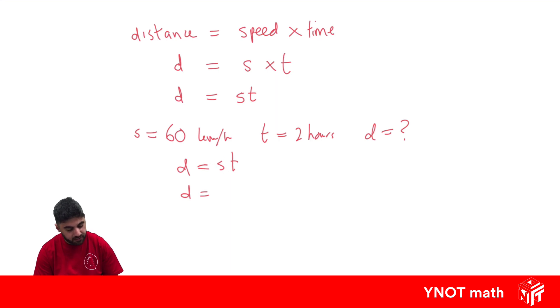So instead of writing s, we can write 60. Now, instead of writing t, we know t is equal to 2. Now we have to put the multiplication sign back, because now we're dealing with two numbers. I can't just write 602. And d is just going to equal 60 times 2, which is 120 kilometers. And that's an example of substitution.